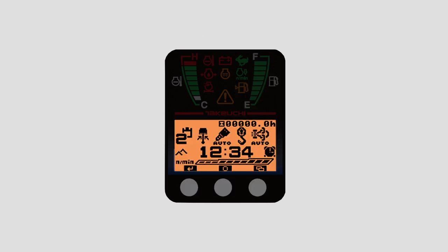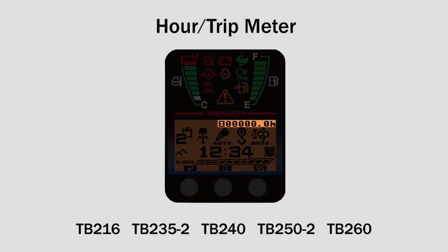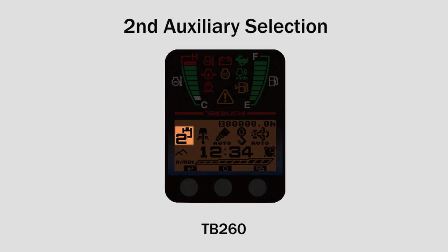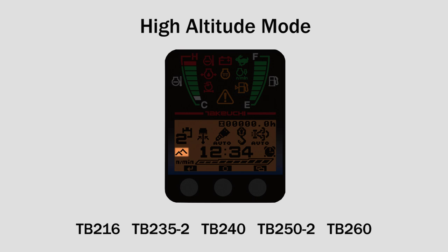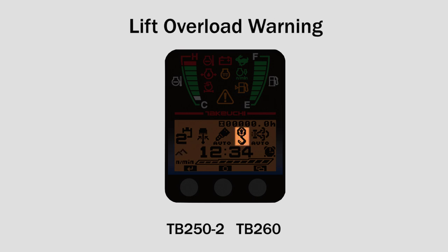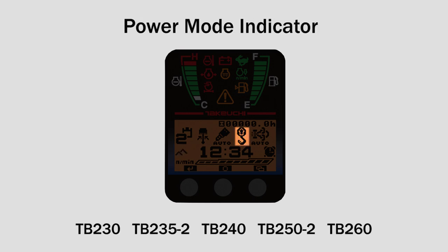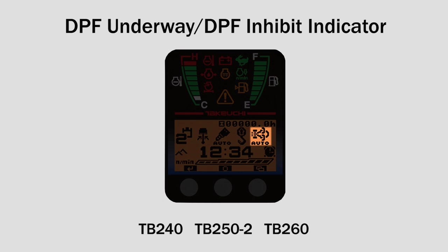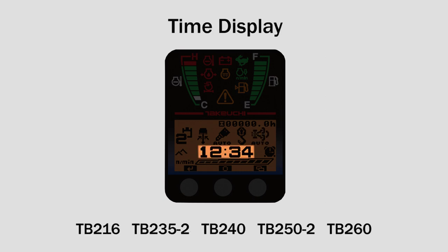The LCD portion of the monitor contains the following icons: hour and trip meter, second auxiliary selection, high altitude mode, lift overload warning and power mode indicator, DPF underway and DPF inhibit indicator, and time display.